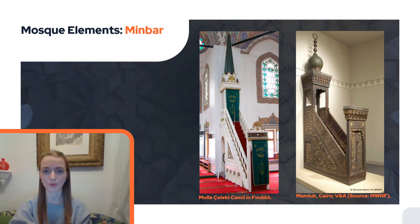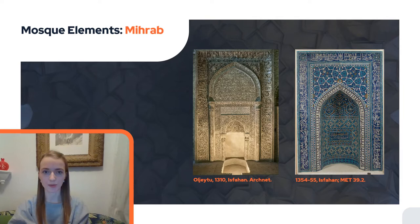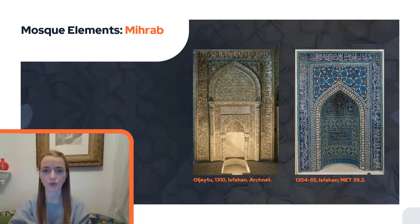Let us now look at the mosque's particular elements and their functions. The minbar is an elevated seat next to the mihrab that the preacher used as a pulpit. The mihrab is a semi-circular niche on the qibla wall indicating the direction of Mecca. It is inserted into the wall surface — a sovereignty motif from late antiquity, similar to the apse in early Christian church interiors. It often contains the motif of a lamp, alluding to the light verse in the Quran. This light symbolism makes the mihrab a sacred place, and inscriptions are mostly Quranic quotations; the throne verse is also found here, describing God's omnipotence and omnipresence.